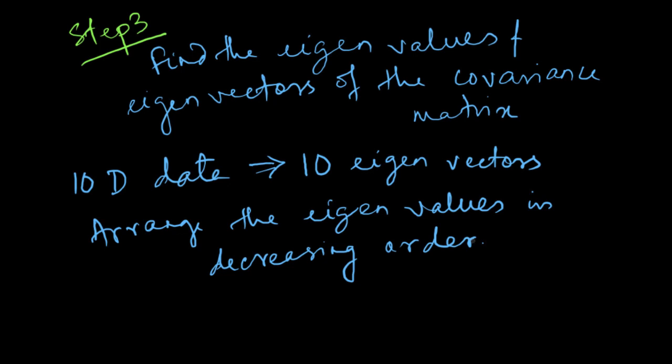If your problem is inherently non-linear and simple PCA does not work, there are also kernel tricks — similar to what you have learned in SVM analysis — which can be used in PCA for handling non-linearities in the relationship between input variables. This was an intuitive explanation for PCA. In the next video we are going to understand PCA from a more mathematical perspective.